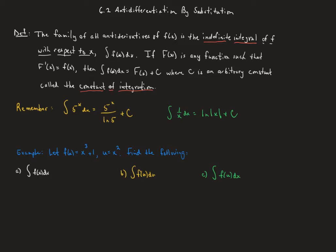Let's remember some integrals from our past. The integral of 5 to the x dx is 5 to the x over the natural log of 5, plus c. The integral of 1 over x dx is the natural log of the absolute value of x, plus c.